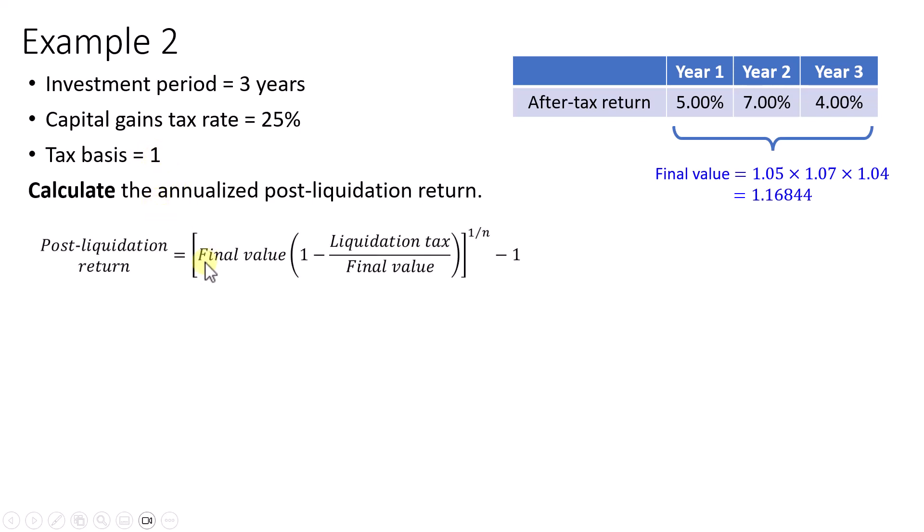When you calculate the post-liquidation return, this time when you calculate the liquidation tax you will take the final value minus the tax basis, then multiply by the capital gains tax rate.